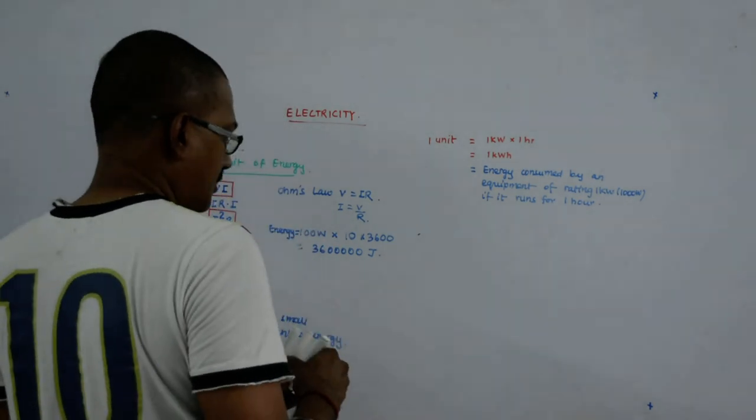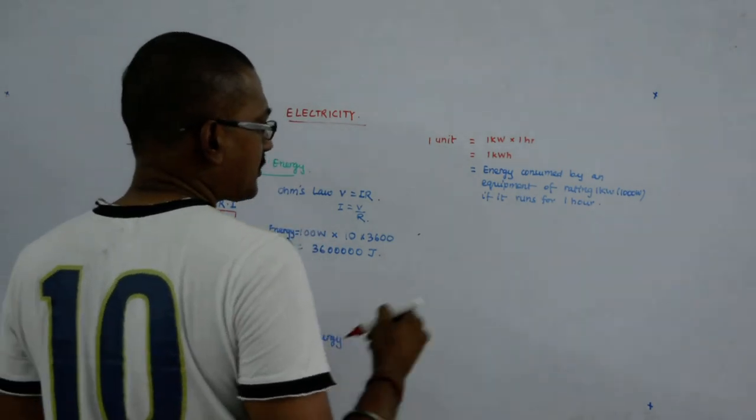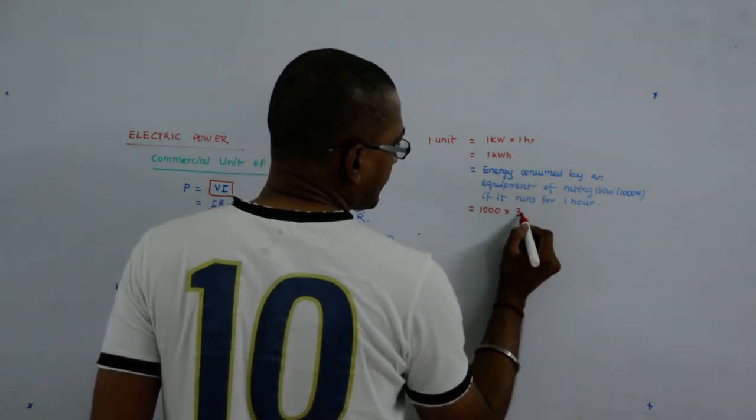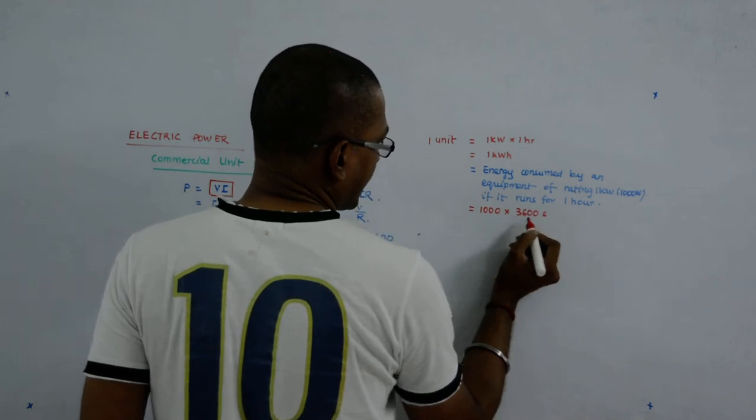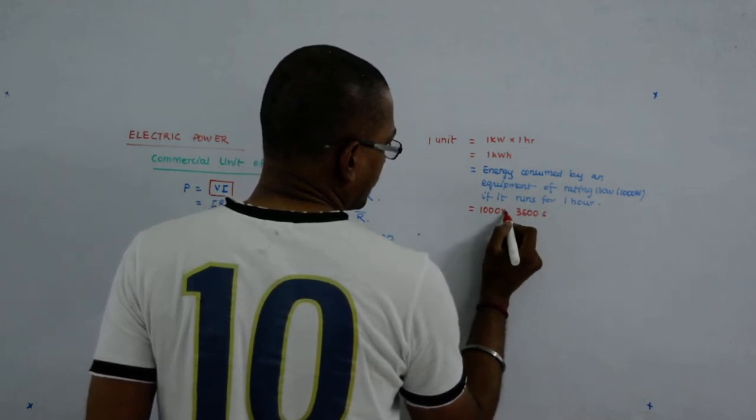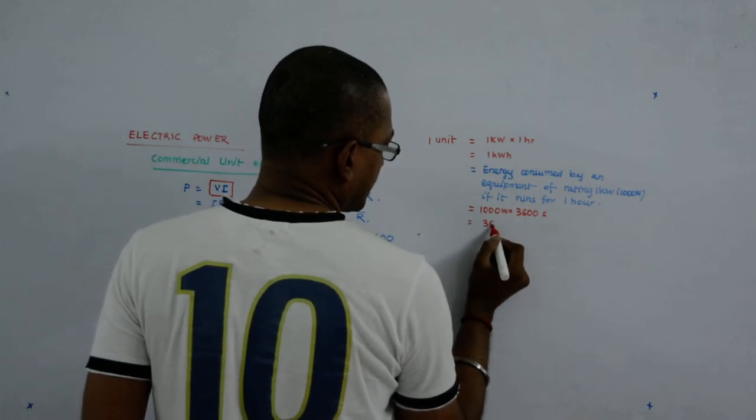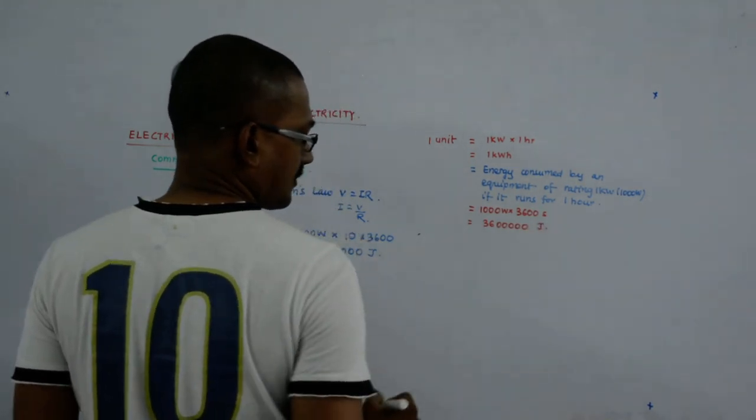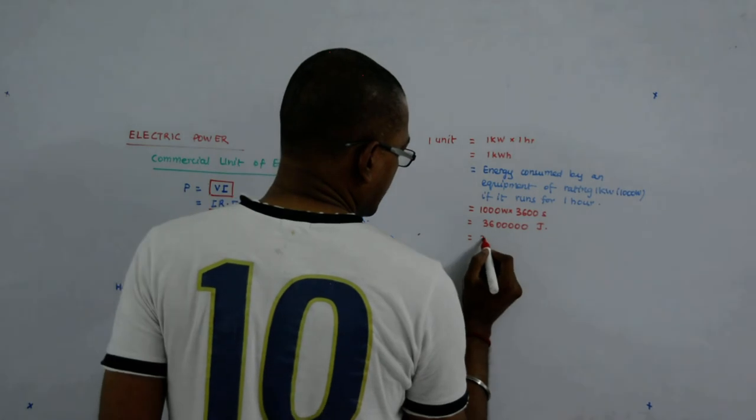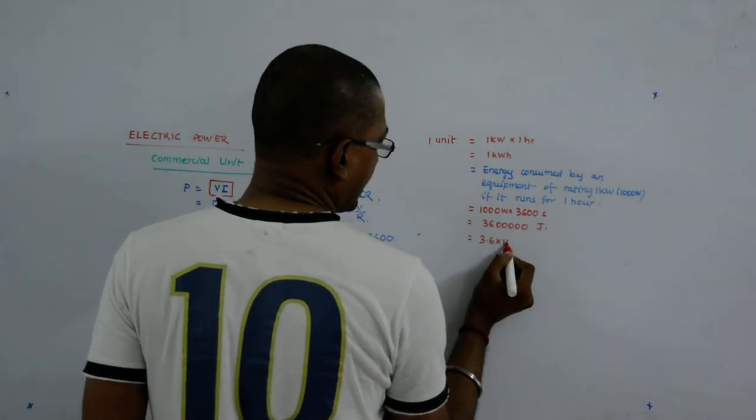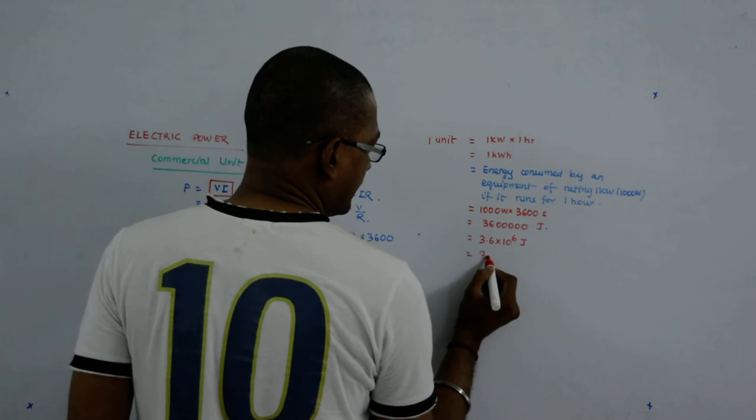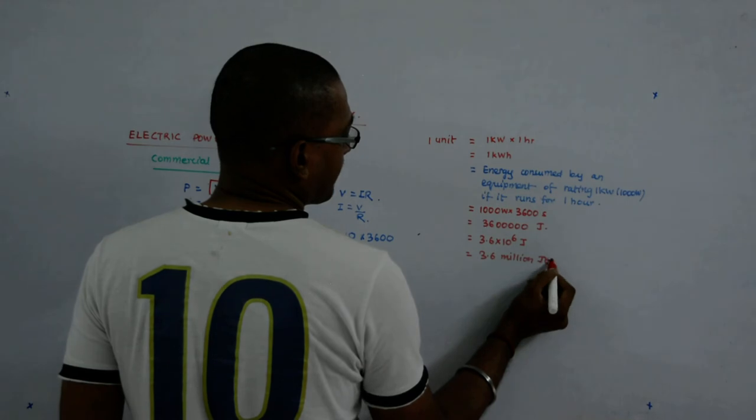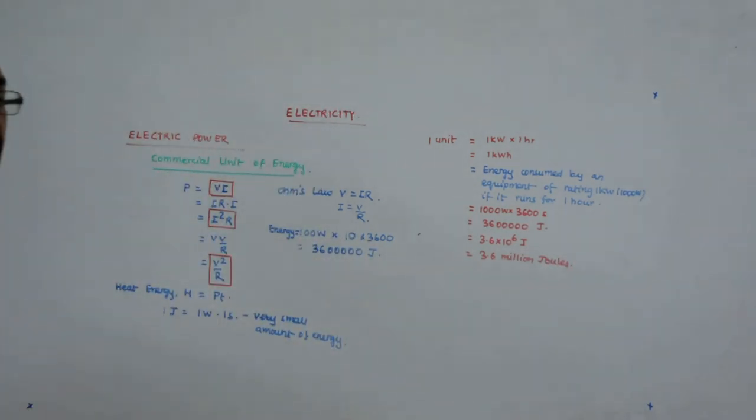Otherwise in joules what is it? Let us see. One kilowatt is thousand watts into one hour has 3600 seconds. So this gives me 3.6 into 10 to the power 6 joules, which is 3.6 million joules. 3.6 million joules is one unit of electricity.